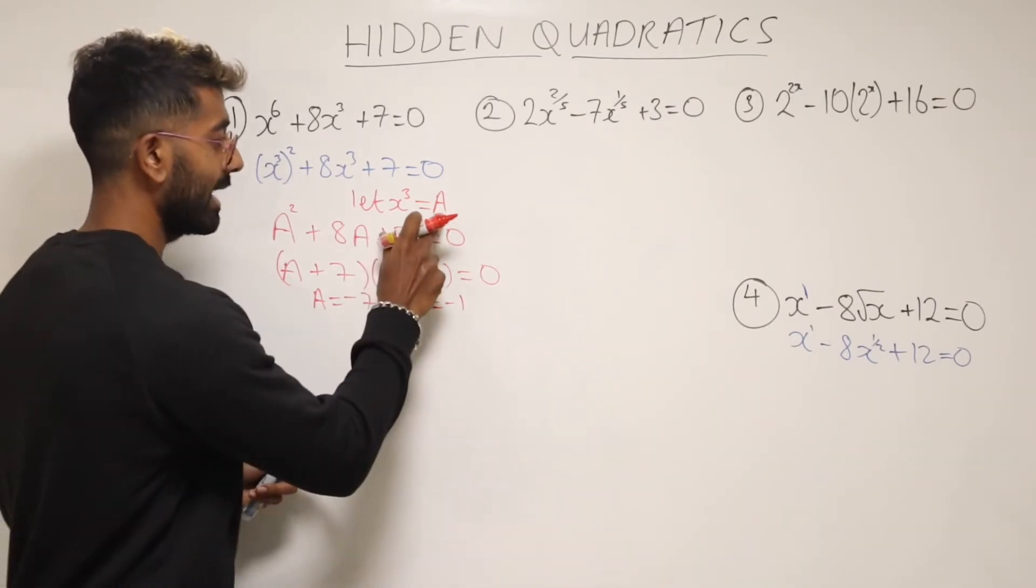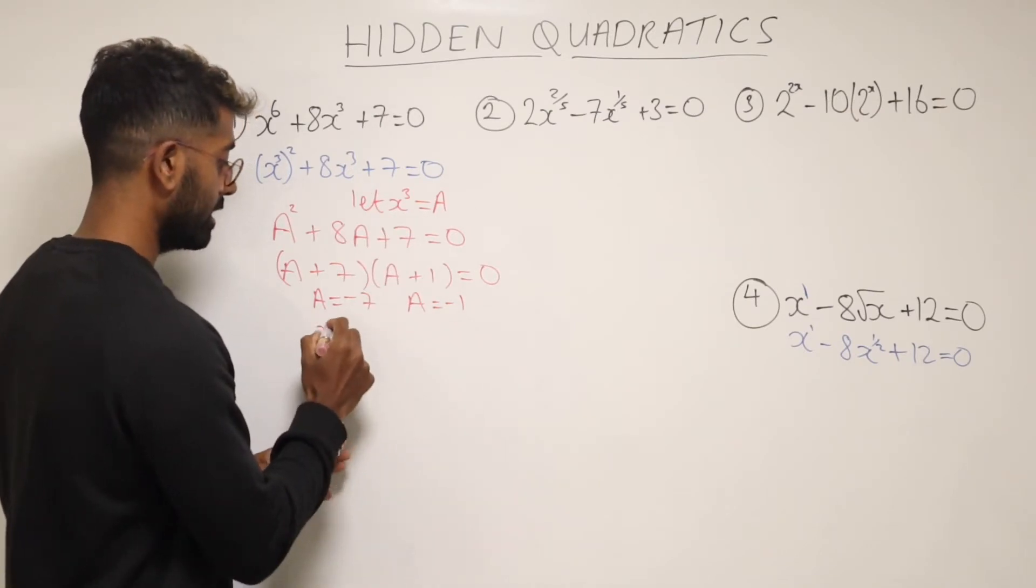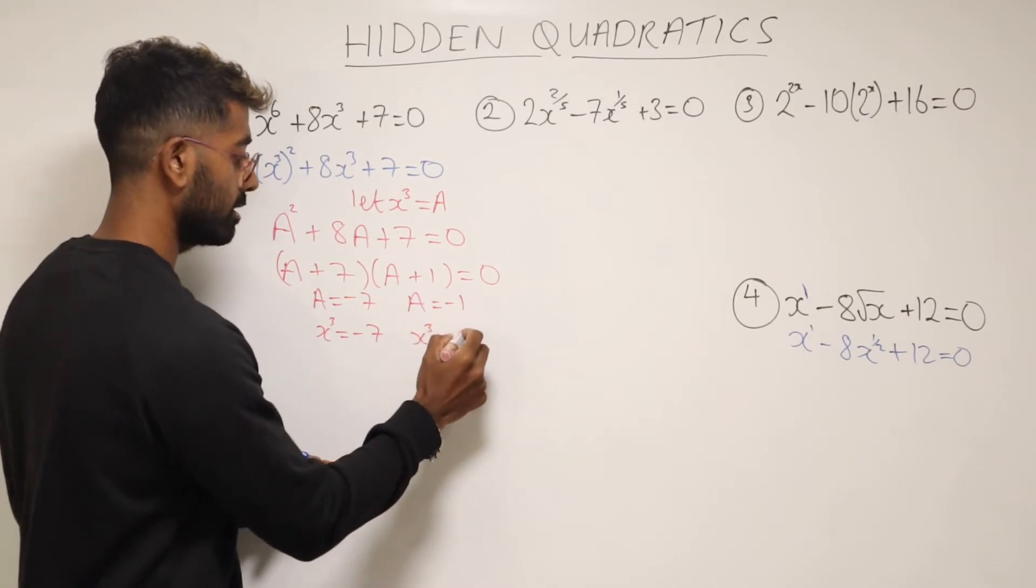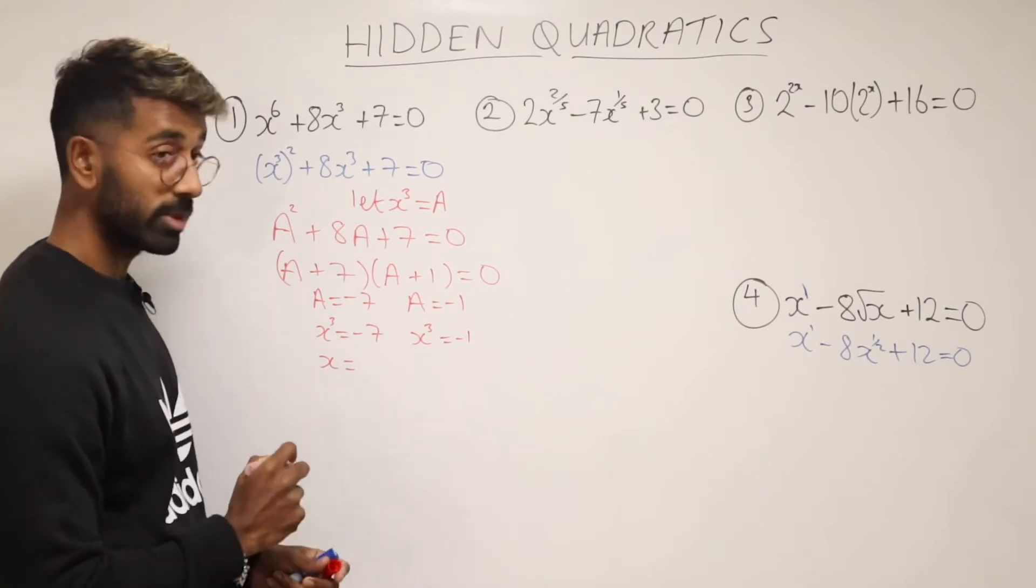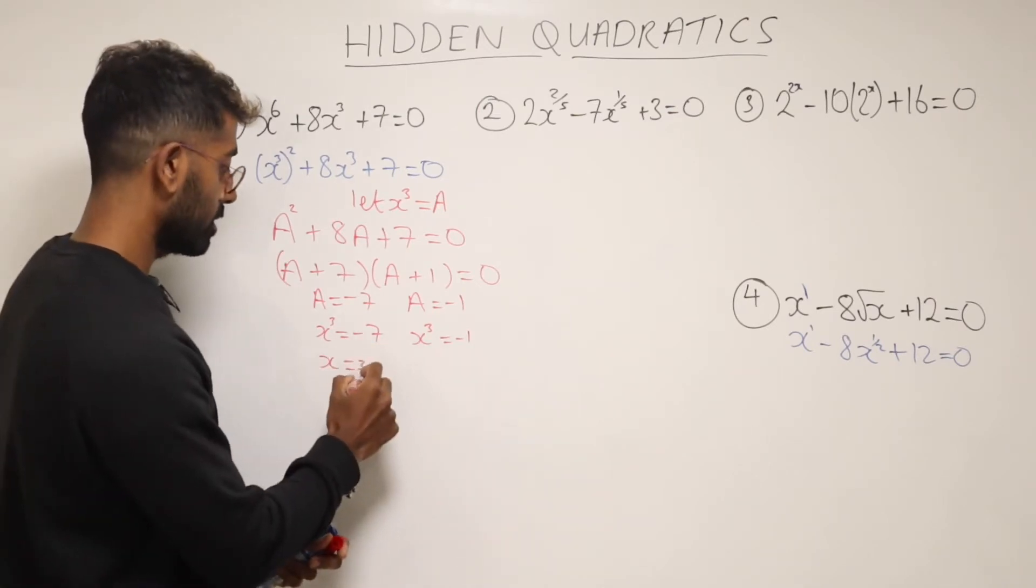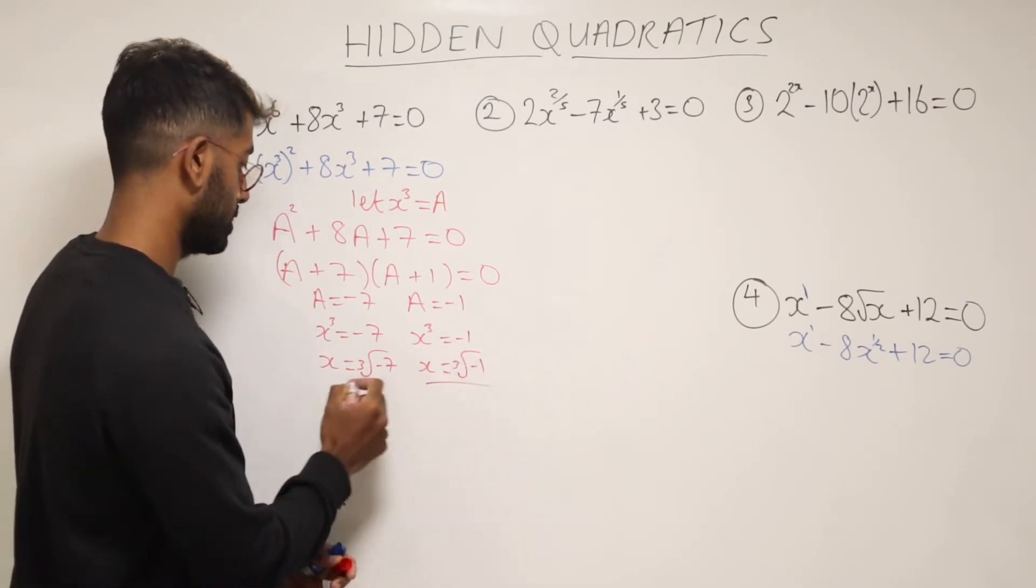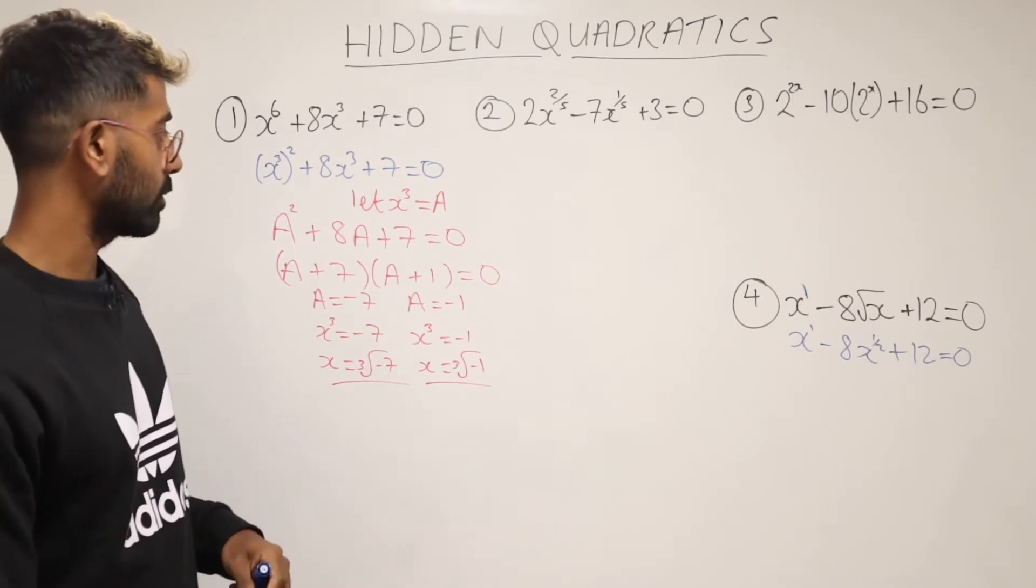So what we need is to give an answer where it has x equals something. Now we said A is exactly the same as x cubed. So we can say now that x cubed is minus 7 and x cubed is minus 1. And now to get answers for x, all we need to do is cube root our answers here. So x is then equal to cube root of minus 7 and cube root of minus 1. And that's that one done.